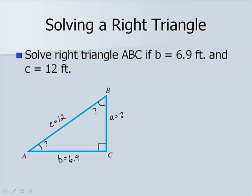Let's find side a first, and we'll use the Pythagorean theorem, knowing that a squared plus b squared equals c squared, or that a squared would be c squared minus b squared.